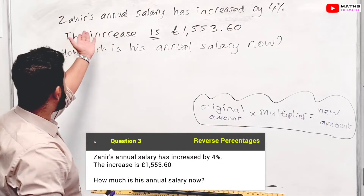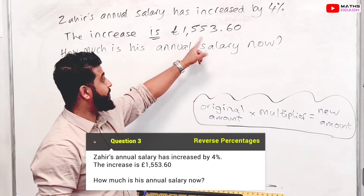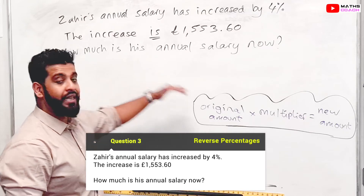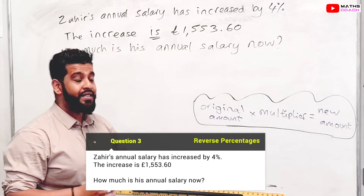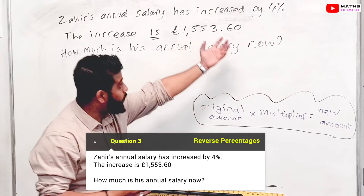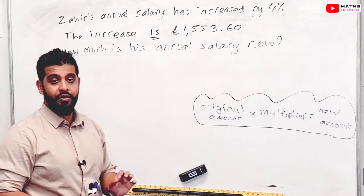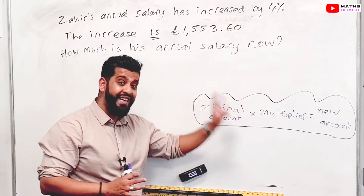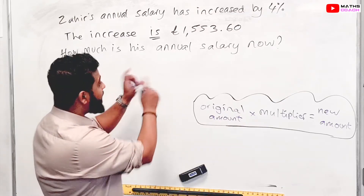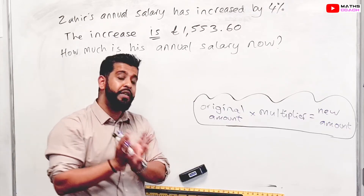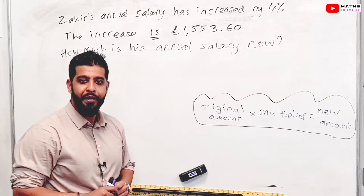The question here is: Zahir's annual salary has increased by 4%. The increase is £1,553.60. How much is his annual salary now? What's different about this question is this line — it says the increase of 4% is worth this specific amount. So for this, we won't use the previous method; instead we'll use a unitary method, a proportion method. Look out for these types of questions — most exam questions will be like the previous type, but if you do get one of these, be prepared.